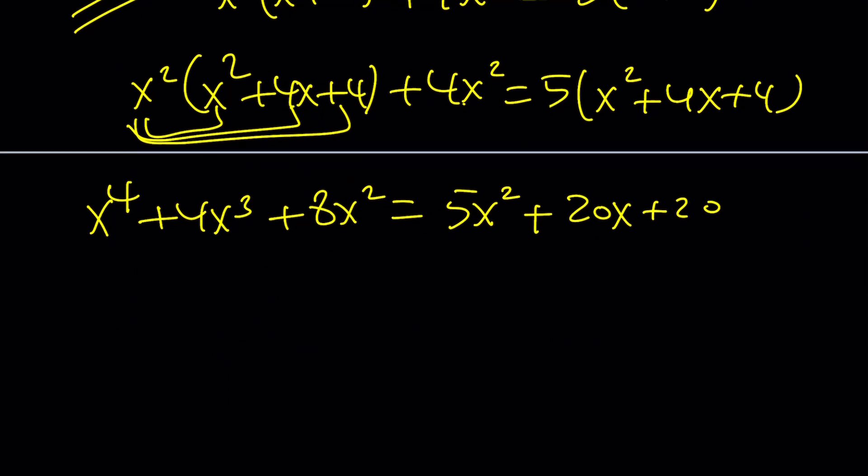Let's put everything on the same side: x⁴ + 4x³. Now I'm going to subtract this so it's going to be 3x² minus 20x minus 20 equals 0. Now we could look for rational solutions or use the quartic formula, a couple different methods to solve quartic equations.